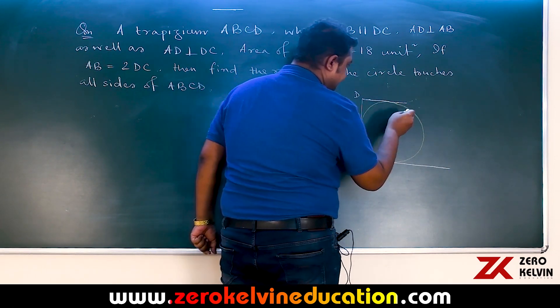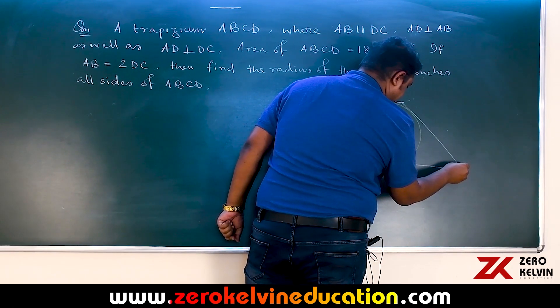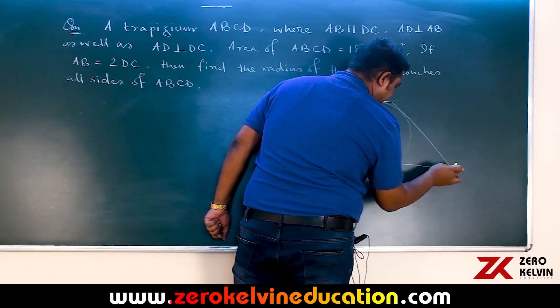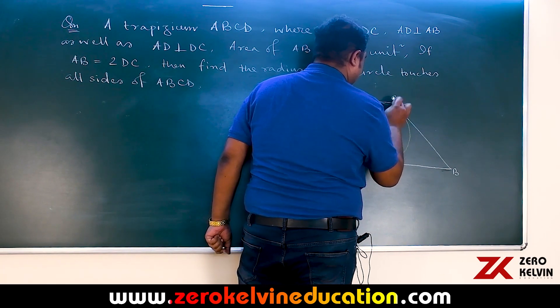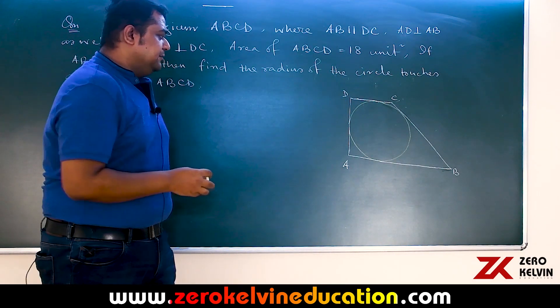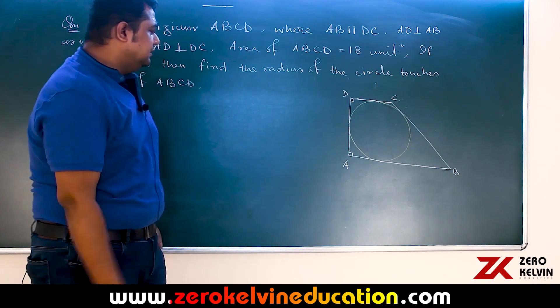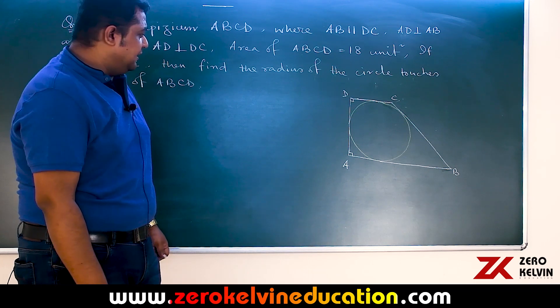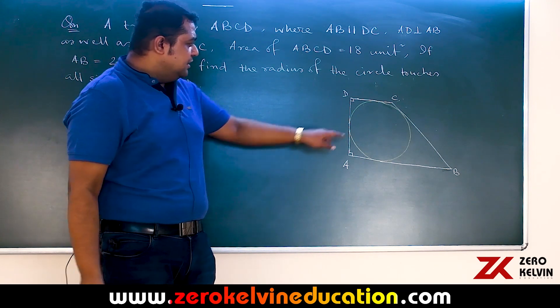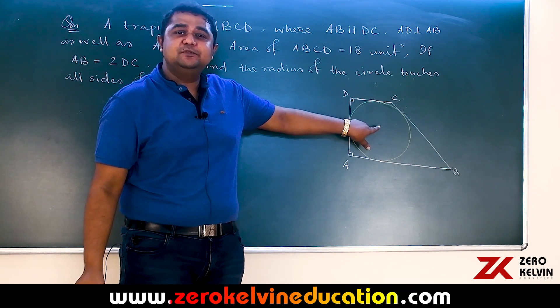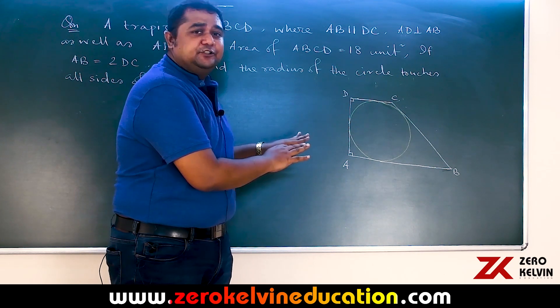Say this is A, this is D, and we need to take C in such a way that AB appears double of DC. This trapezium having angle A as well as angle D right angle, AB and DC are parallel and it has been said AB is double of DC. Our target is to determine radius of this circle which touches all four sides and this is your IIT-JEE problem.